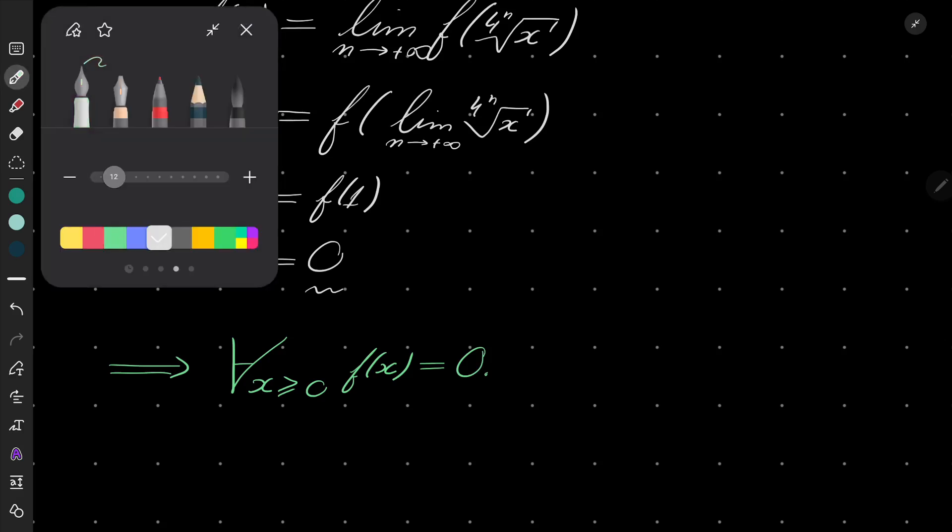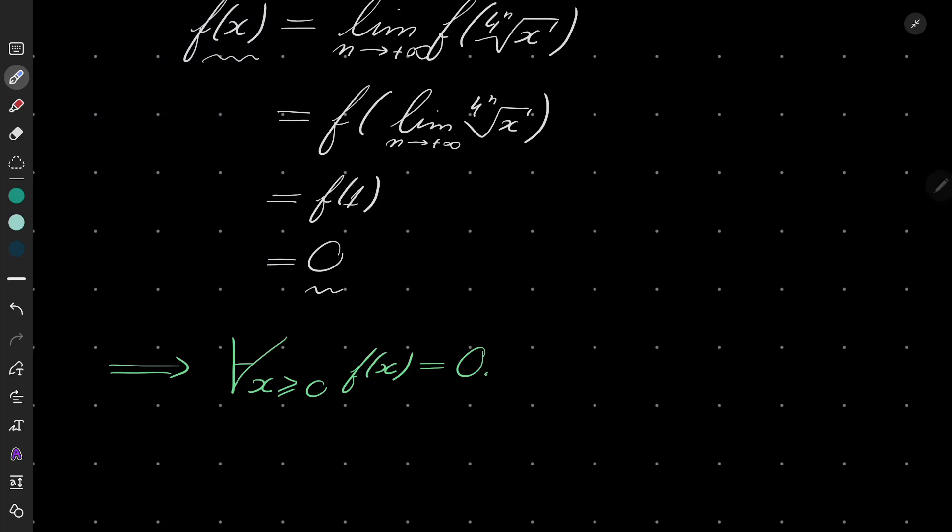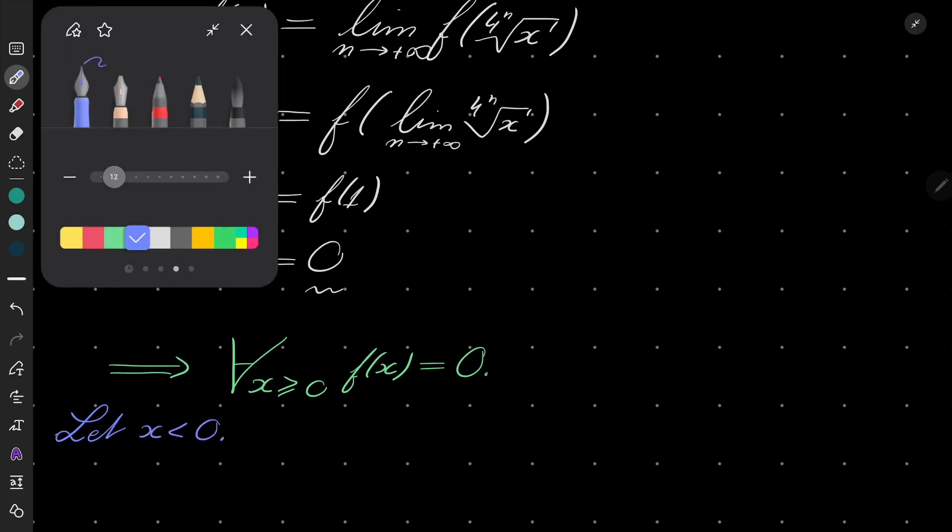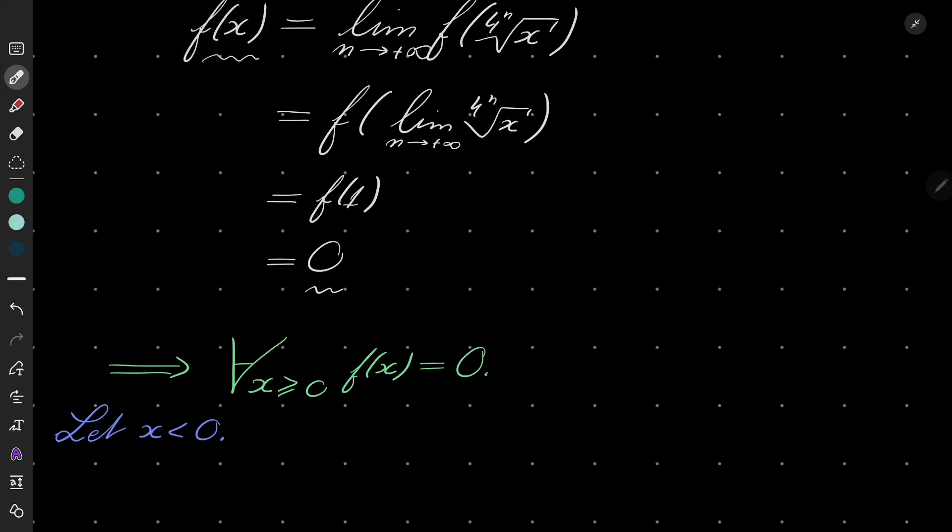And what happens at negative x's? So now let x be negative, and let's notice that f of x from our functional equation, it's minus f of x squared, and x squared is positive. So we know that it is just 0. So our function is constantly 0.